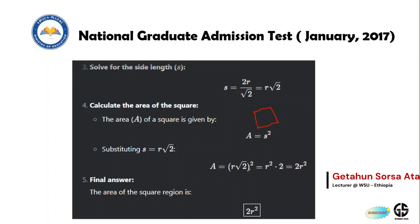Expanding (r√2)² gives r² × 2 = 2r². So the area of the square inscribed in the circle is 2r². The correct answer is choice d.